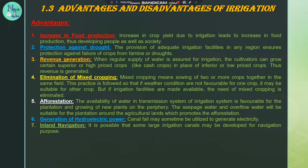With irrigation, cultivators can grow certain superior or high-priced crops like cash crops in place of inferior or low-priced crops. Thus revenue is generated for the country.